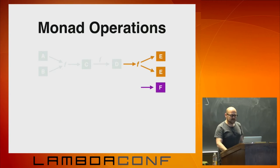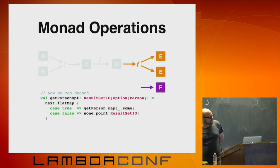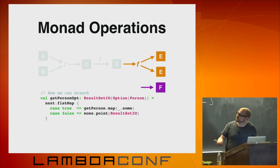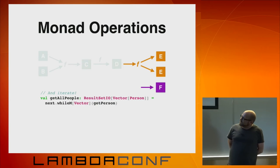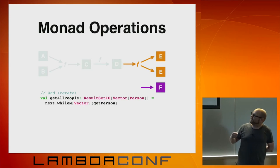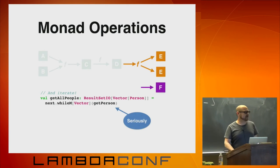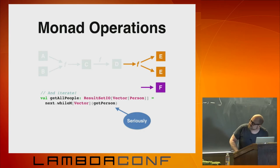The strongest operations we get are from the monad — flat map and unit. We can write a program like: look at the result of calling next; if it's true, we'll get a person and turn it into an Option using map; if it's false, we'll return None. So this program may or may not give us a person back when we run it. Furthermore, we can iterate if we have a monad. We can say: evaluate next, and as long as it's giving us true values, run getPerson and accumulate those results in a vector. And seriously, that's how you would write that in Doobie. It actually legitimately runs and it's stack safe. This is a program that reads everything in a result set into a vector of people.